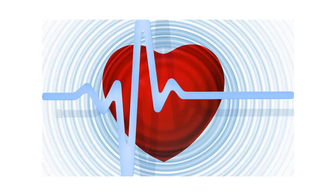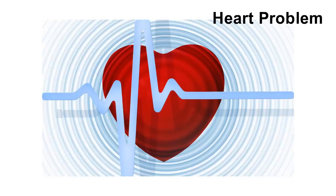Heart problems — as the anemic blood contains a low amount of oxygen, so as to supply an adequate amount of oxygen to various parts of the body, the heart has to beat faster.